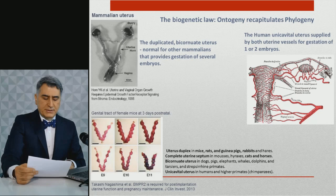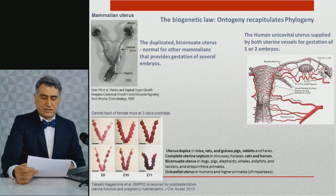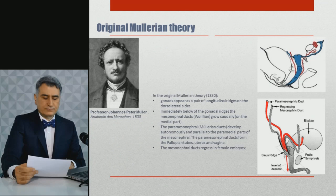The duplicated bicornuate uterus is normal for other mammals, providing gestation of several embryos. In humans, the unicavitary uterus is supplied by both uterine vessels for optimal blood supply during gestation of one or two embryos.